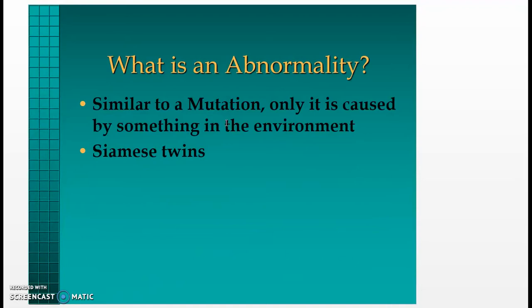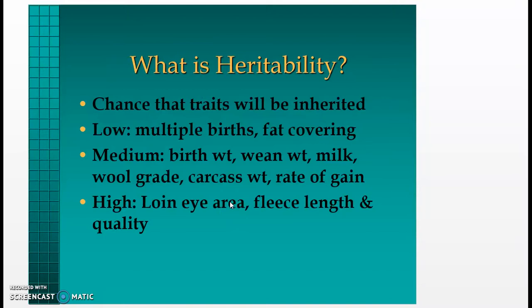What is an abnormality? An abnormality is similar to a mutation, but it is caused by something in the environment — like Siamese twins. What is heritability? It is the chance that traits will be inherited. Low heritability traits include multiple births and fat covering. Medium heritability traits include birth weight, weaning weight, milking, wool grade, carcass weight, and rate of gain. High heritability traits include loin eye area and fleece length and quality.